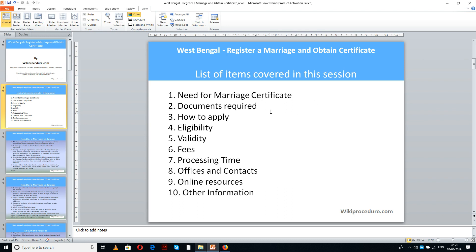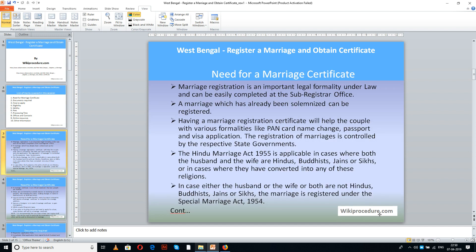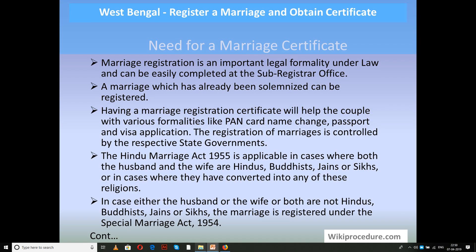The list of items covered in this session includes: need for marriage certificate, documents required, how to apply, eligibility, validity, fees, processing time, offices and contacts, online resources, and other information. This procedure is sponsored by Wikiprocedure.com.